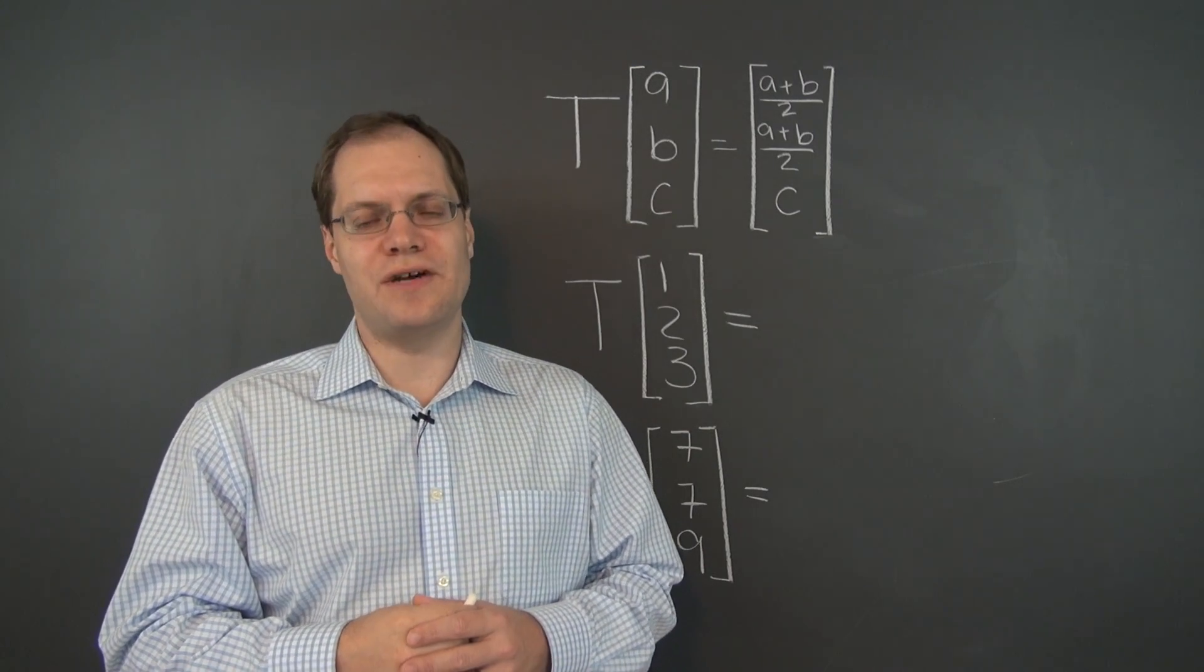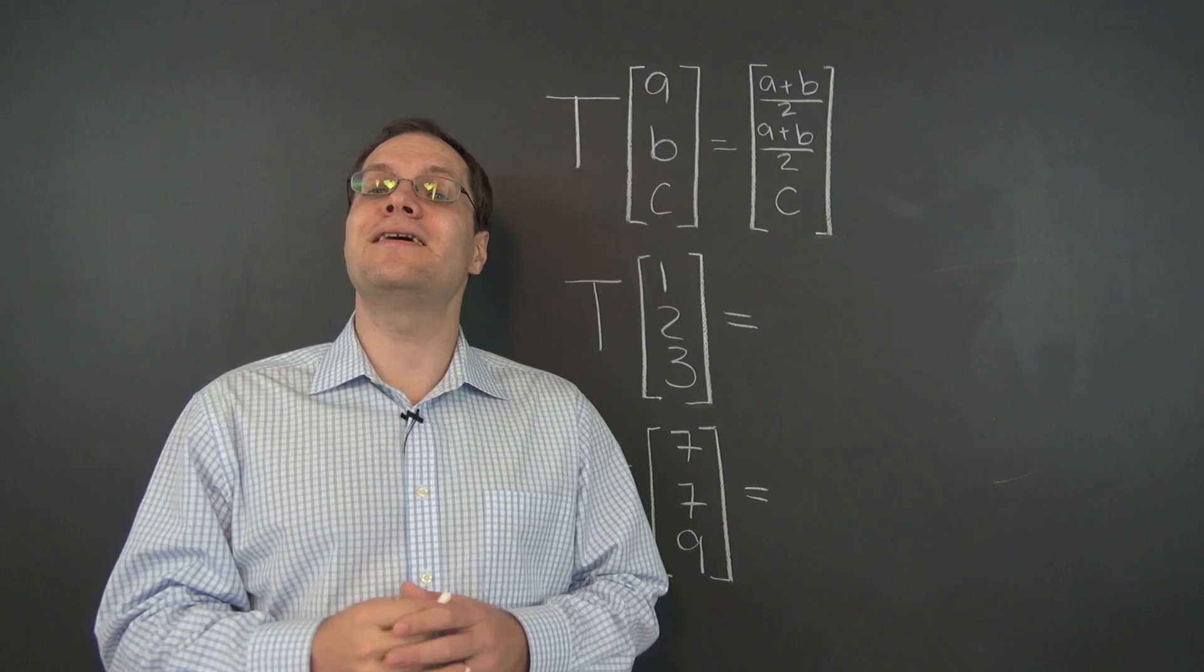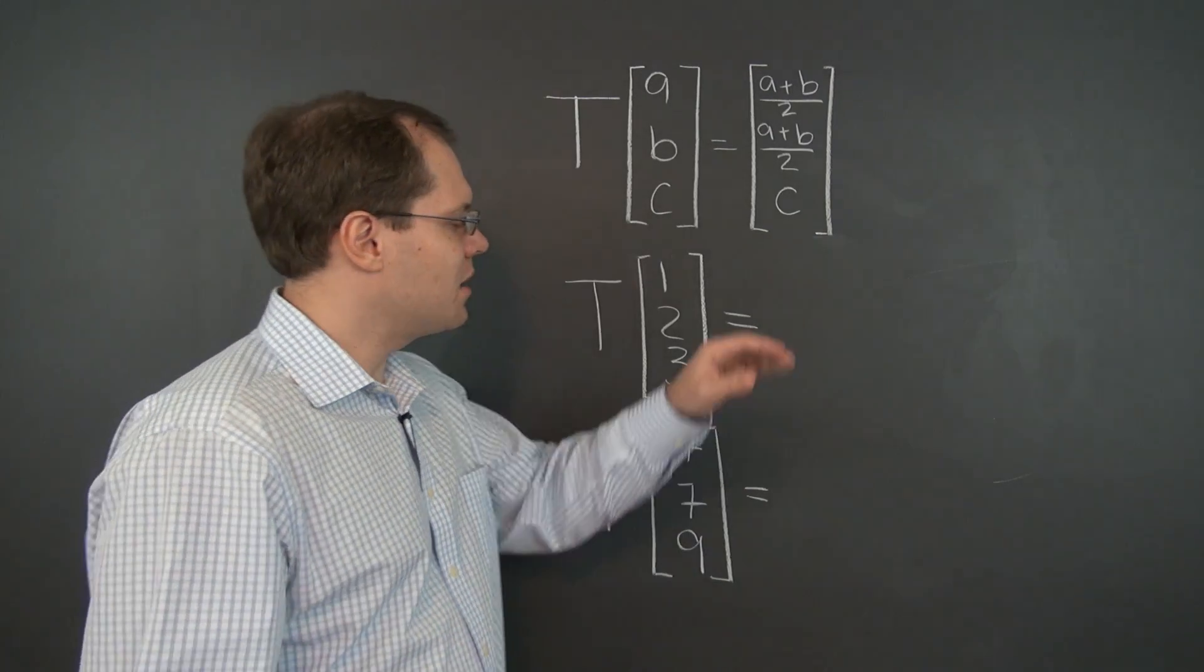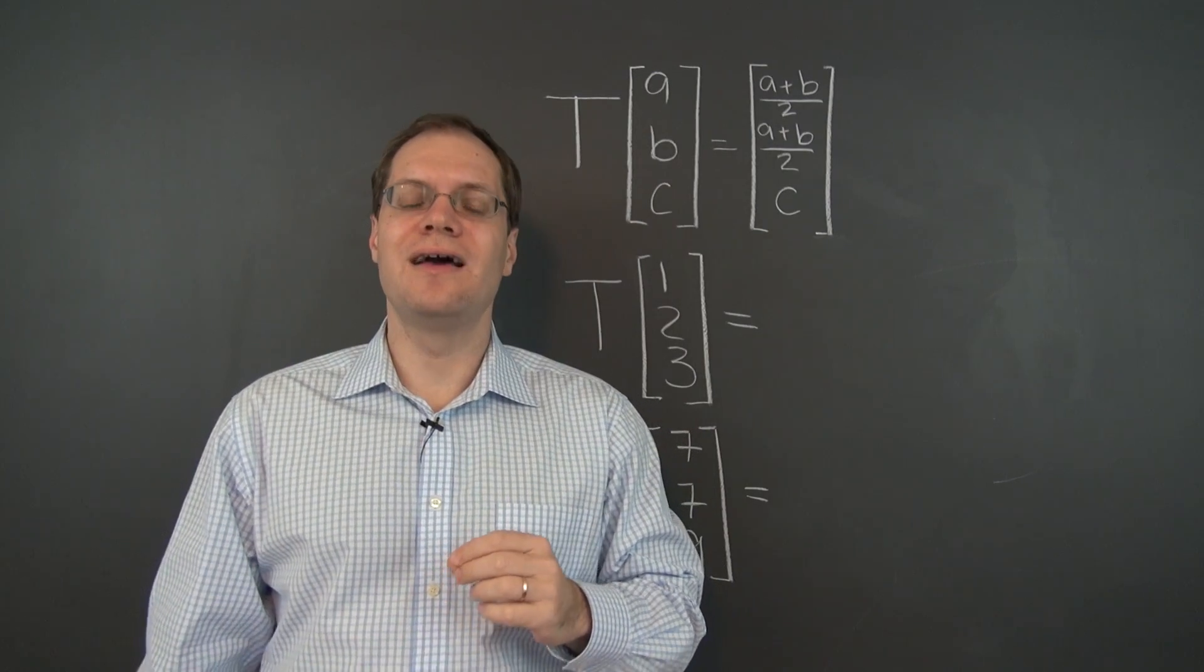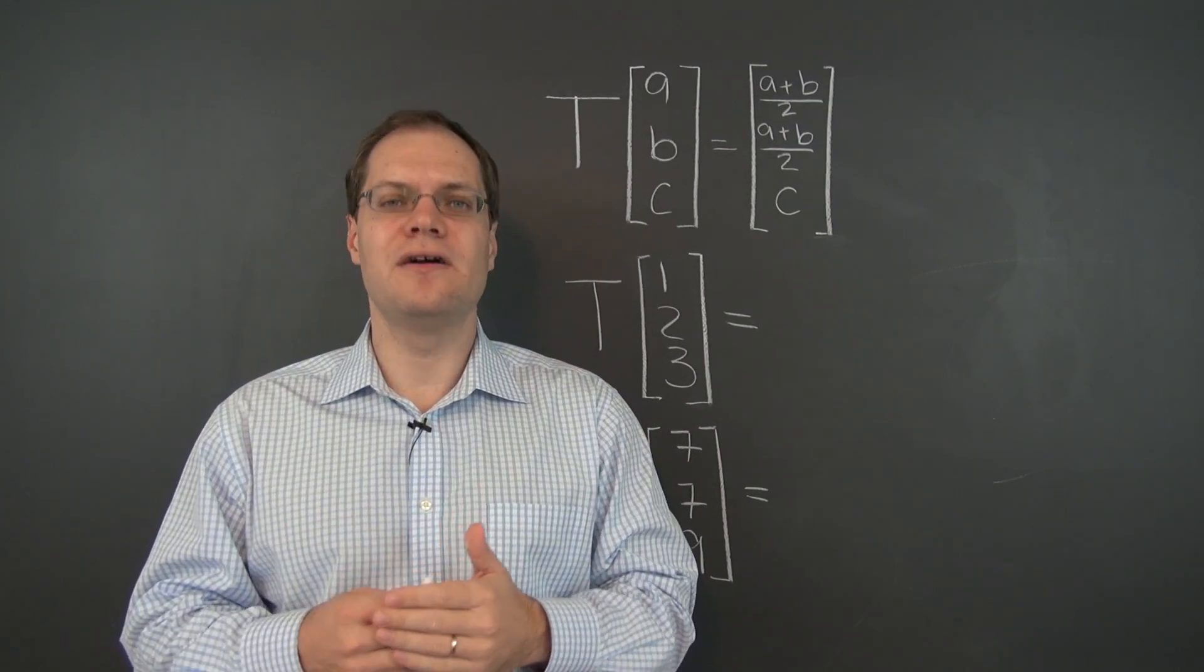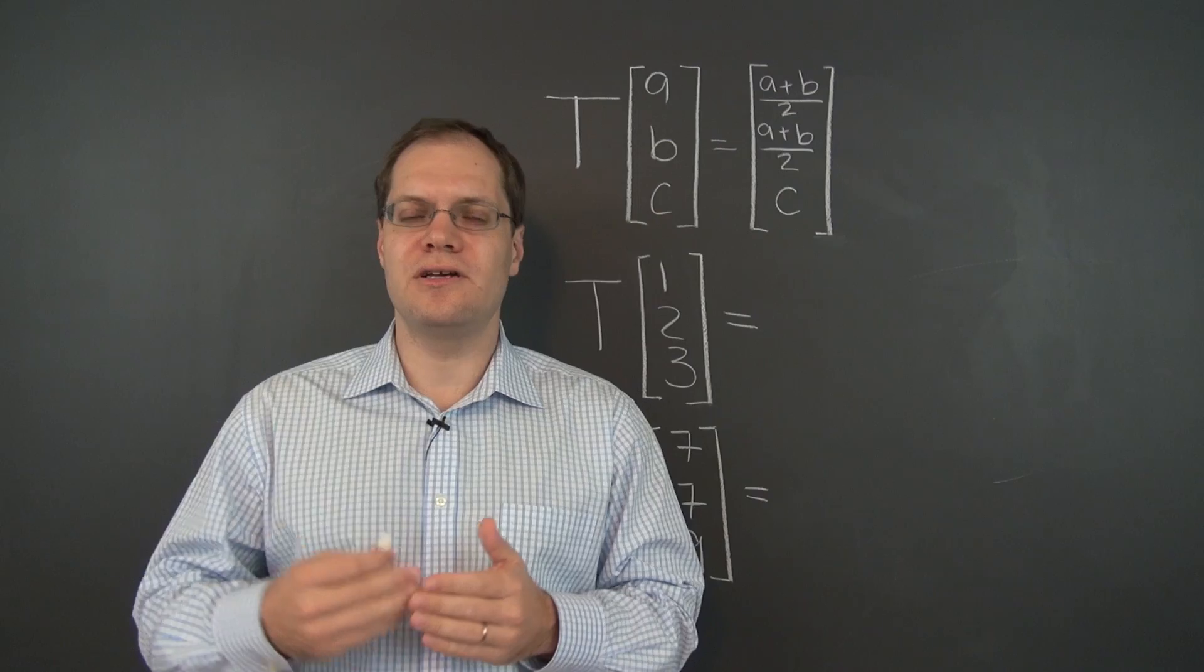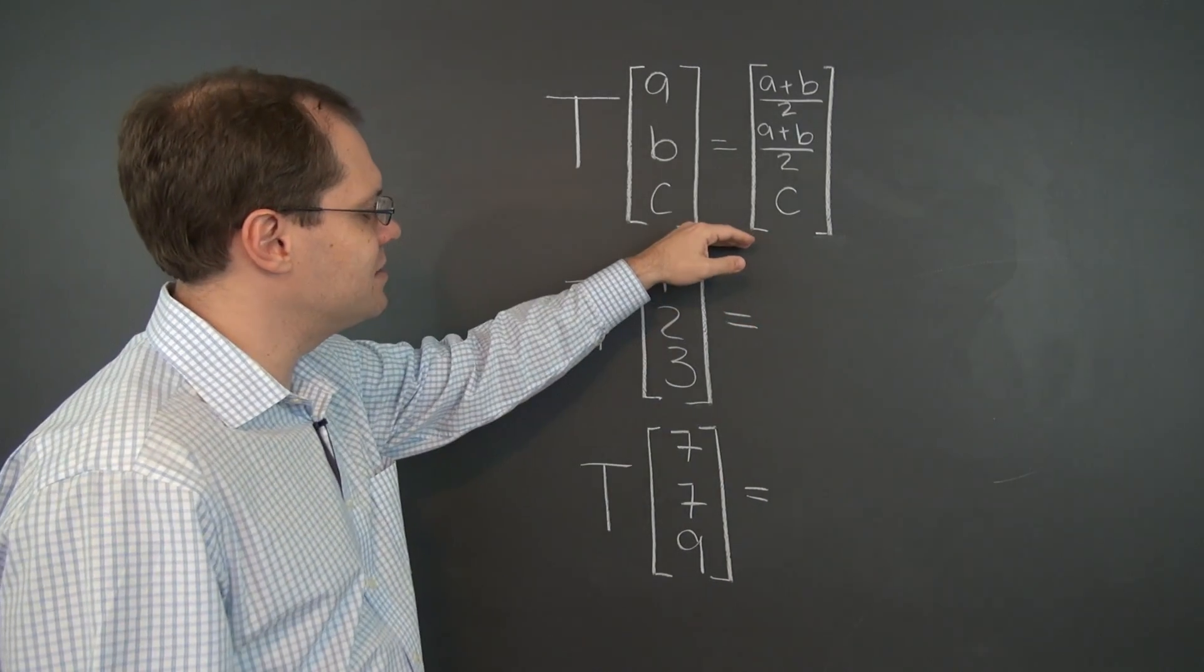Here is our second transformation of vectors in R3, and I think it's a very interesting one. Once again, I need to specify how each entry is transformed, and it needs to be precise enough that you can apply this transformation to any input. And I think in this case it is.